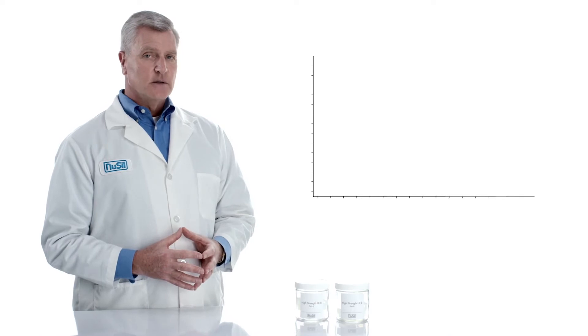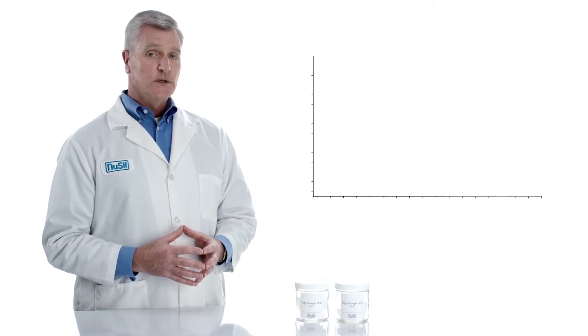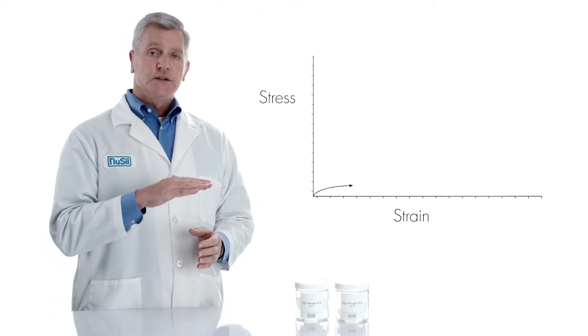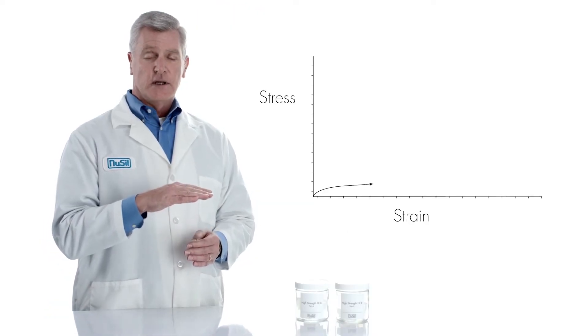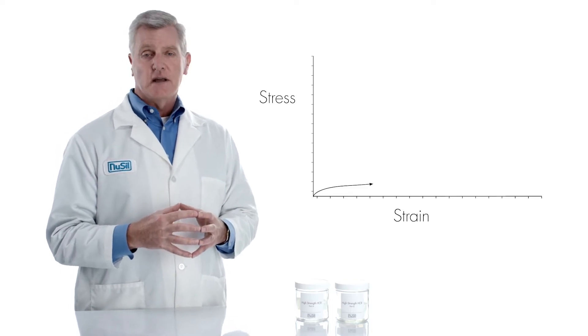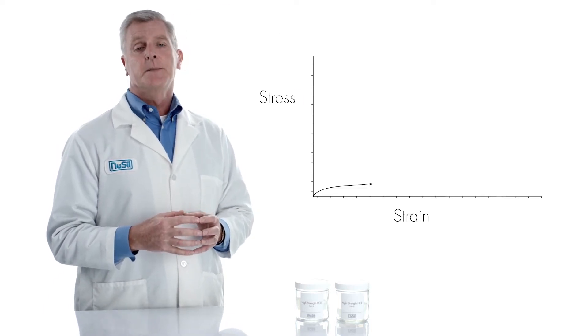As the material is stretched initially we see the stress strain curve has a relatively steep slope. This indicates that the material has a slightly higher modulus or is somewhat stiffer. Next you see the curve flatten to some degree. This indicates that there's some irreversible change taking place inside the material, something we call viscous or creep type behavior.